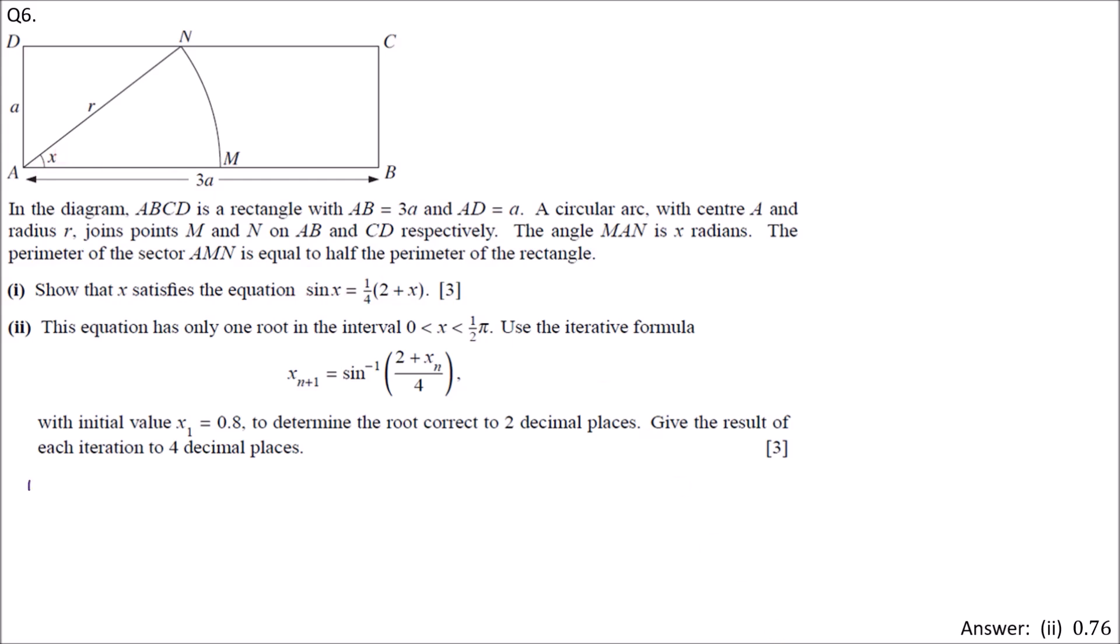X must satisfy this equation. We solve the first part. The information given is: perimeter of sector AMN equals half times perimeter of rectangle. Half times perimeter of rectangle: two times length 3A plus 3A, plus two times width A plus A.